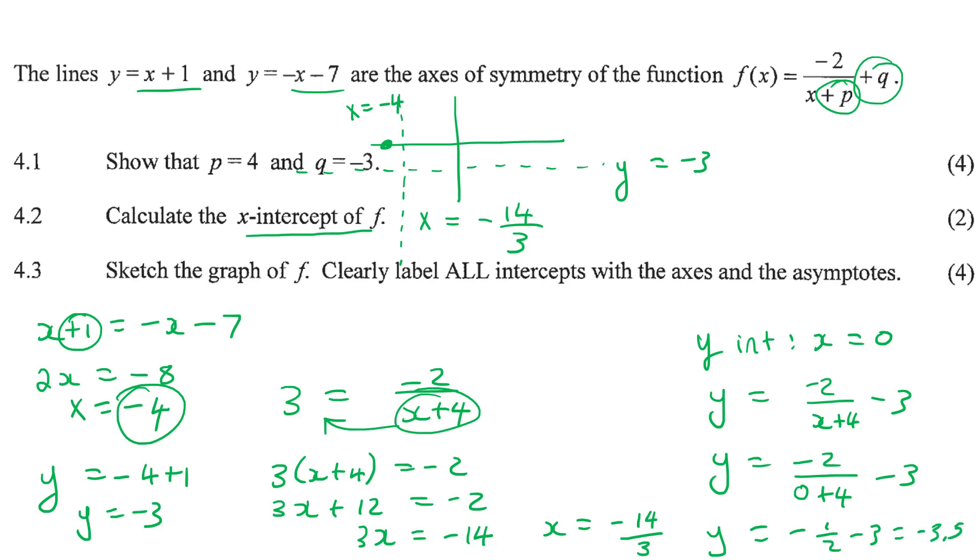Negative 3.5. So that would be, if this is negative 3, then negative 3.5 would have to be a little bit lower down. So we can easily get the graph now. We know that it's in this quadrant and this quadrant. And so then you can just do something like this. Like that. And then like this.